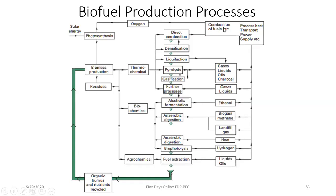Thermochemical routes include direct combustion, densification, liquefaction, pyrolysis, and gasification. Biochemical routes include alcoholic fermentation (producing ethanol to run engines), anaerobic digestion (producing biogas for combustion in engines to generate mechanical and then electrical energy), and biophotolysis (producing hydrogen). Plant oils can also be extracted as fuel for engines.